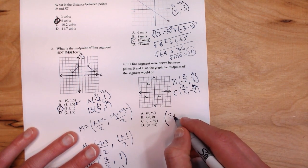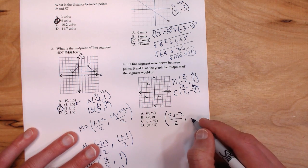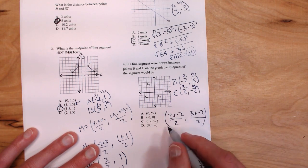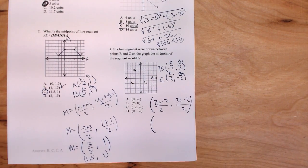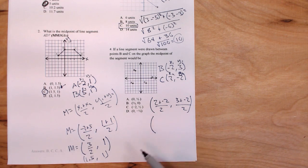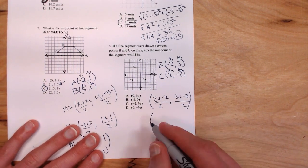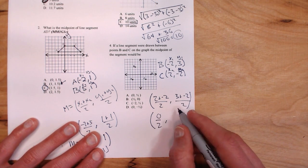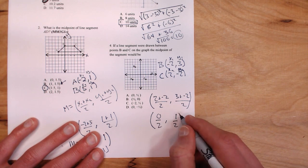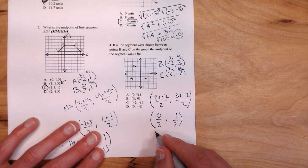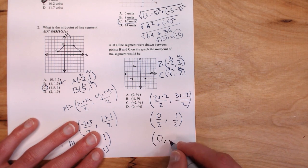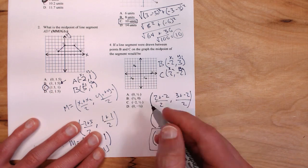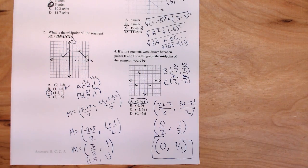So x1 plus x2 is going to be negative 2 plus 2 over 2, comma, 3 plus negative 2 over 2. You should have it memorized and I just plugged in x and y. Now 2 plus negative 2, that's the same as 2 minus 2, which is 0 over 2, and this is 3 plus negative 2, which is the same thing as 3 minus 2, which is 1. So 0 over 2, 0 over anything is just 0, and one half. So there's our answer. The answer must be A.